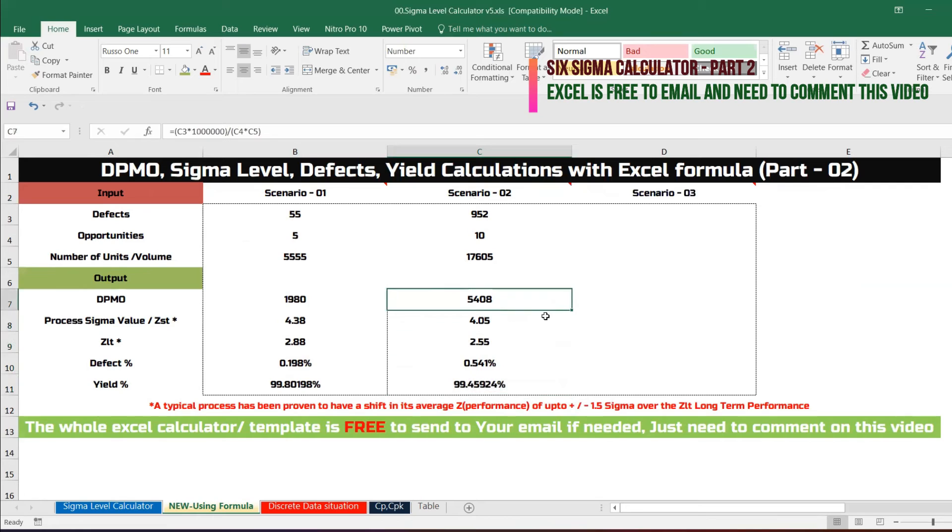C3 is the defect divided by C4 and opportunities times volume. This is perfect. When you say process sigma or Z ST, we need to add 1.5, that is perfect. Z LT is perfect. We got the defect will have 0.5%, yield will have 99.5%.